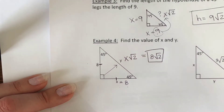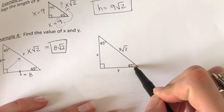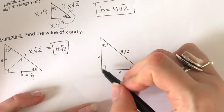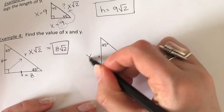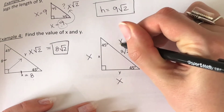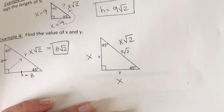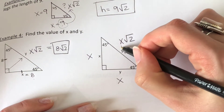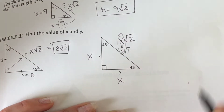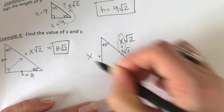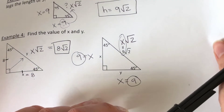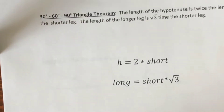The next one is a little bit trickier because they give you the hypotenuse and want you to work backwards to find the legs. Remember, the two short sides are X and X, and the hypotenuse is X times the square root of 2. If it matches up nicely — both have a square root of 2 — then X has to be 9. So if X is 9, these two sides are also going to be 9, and those would be your answers.